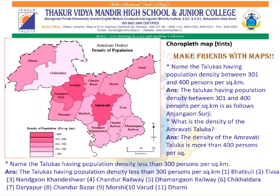Based on the map given, name the Talukas having population density between 301 and 400 people per square kilometer. The Talukas having population density between 301 and 400 are: Anjangao Surji. What is the density of Amravati Taluka? The density of Amravati Taluka is more than 400 people per square kilometer. In the index, we can see the value given as more than 400 per square kilometer, and the shade is darker with the increasing value.